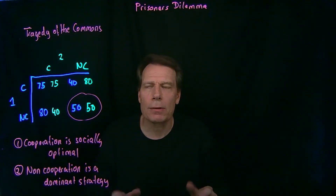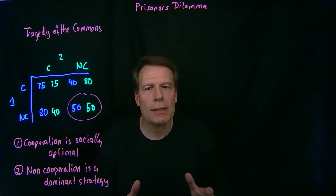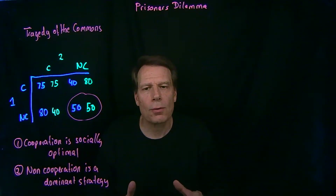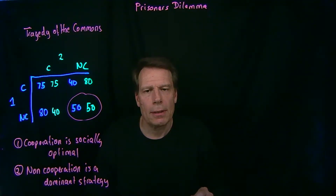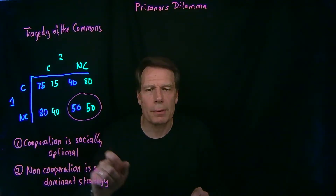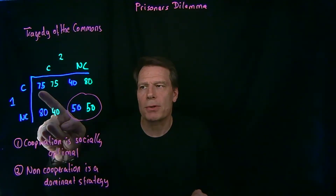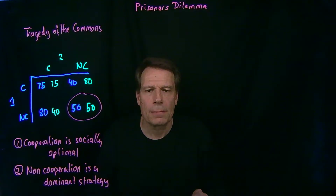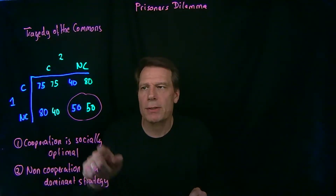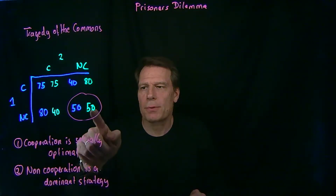We've just seen an example of what we called the tragedy of the commons, where two players had the option of either cooperating and conserving a common resource, or not cooperating and depleting that resource. There were two critical features to that example. The first was that cooperation is socially optimal. When the two players cooperate, they get to the maximum social surplus of 150. But if only one of them cooperates, the social surplus drops to 120, and if neither cooperates, it drops to 100.